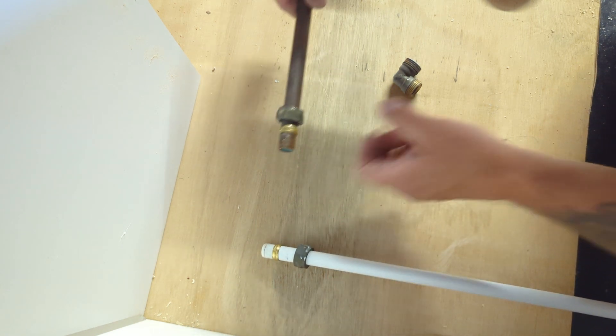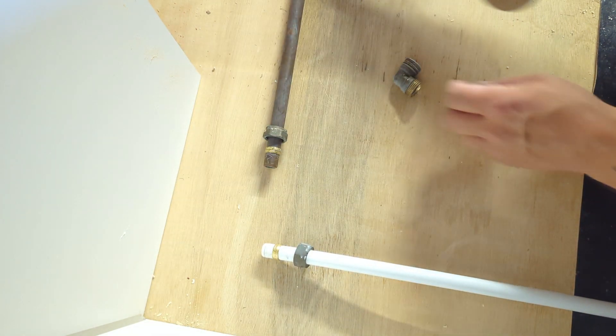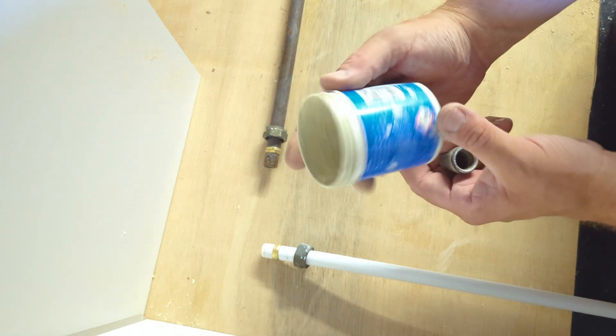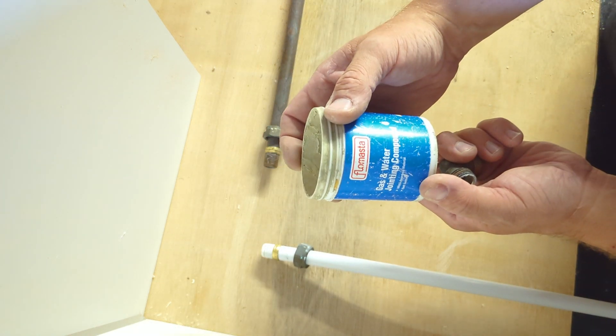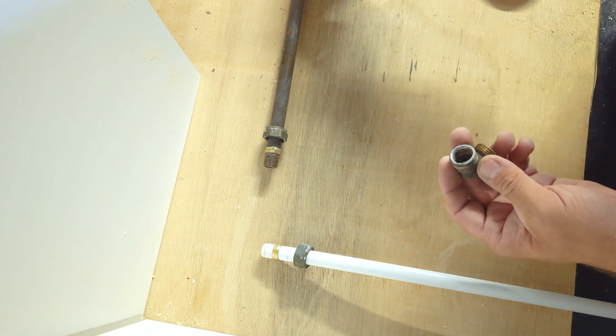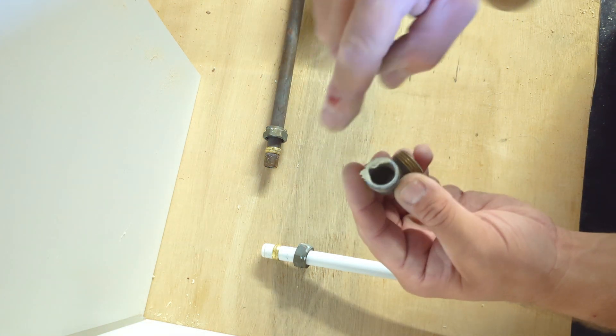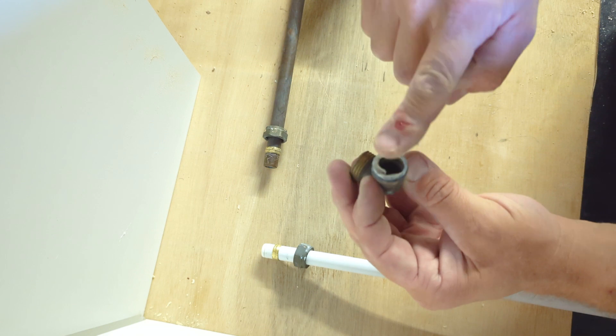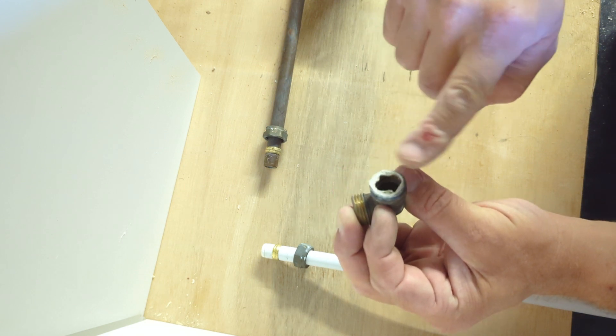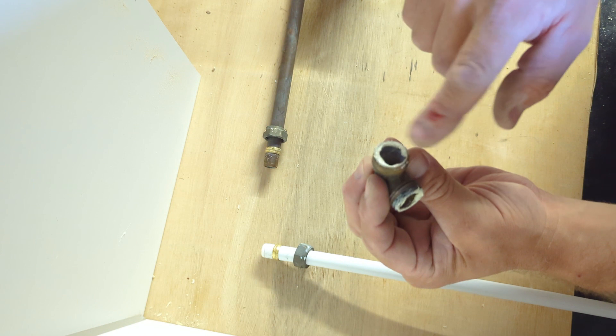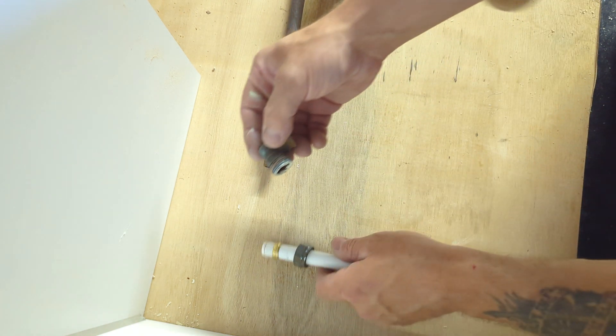We'll place the olives on, and we'll take the fitting and apply a small amount of plumber's paste like the one I have here. We'll just apply that to the inside of the fitting, just like this on both ends. Then we'll insert the pipe.